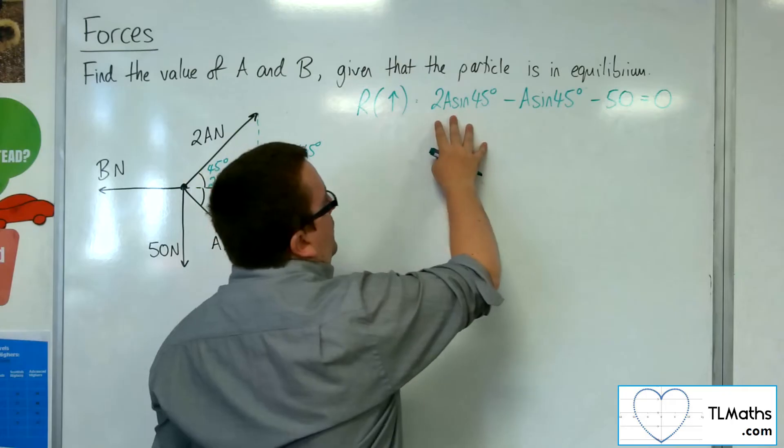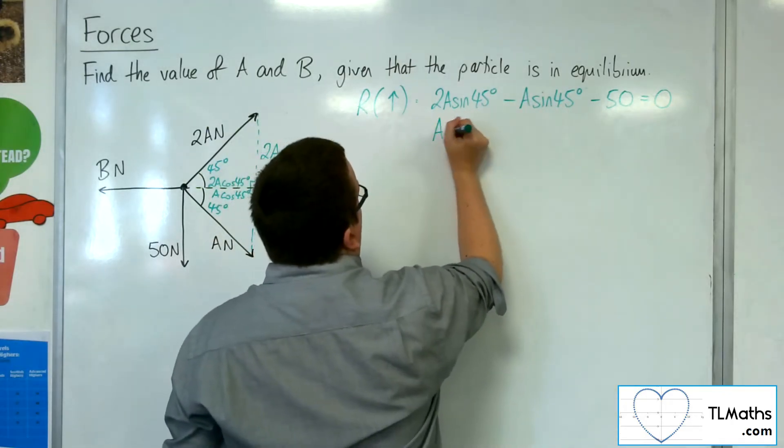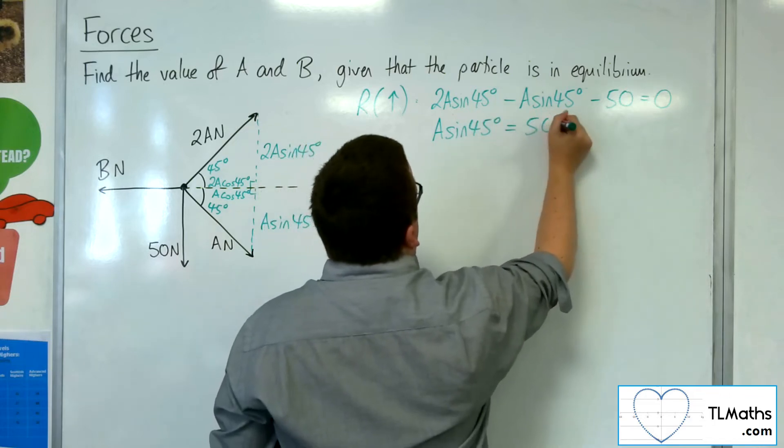Now, if I've got 2 lots of A sine 45, take away 1 lot of A sine 45, I'm left with 1 lot of A sine 45. I can add the 50 to both sides.